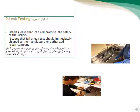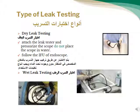Leak test: it confirms the integrity and safety of the scope. Types of leak testing: dry leak testing and wet leak testing. اختبار التسرب هو اختبار للتأكد أن المنظار يعمل بالشكل المطلوب، وفي حال وجود أي مشكلة يتم إصلاحها من قبل المختص.